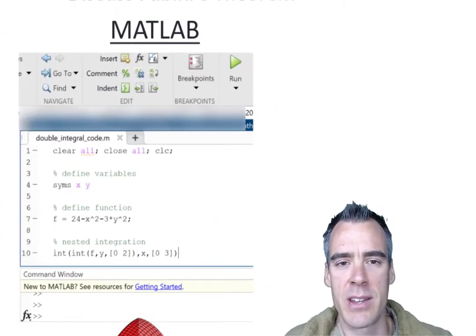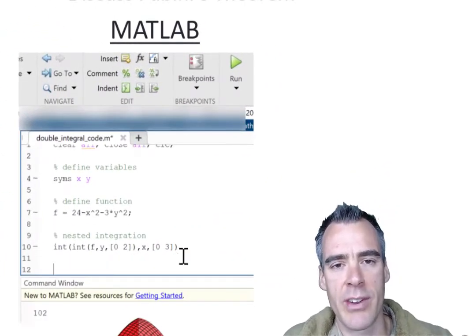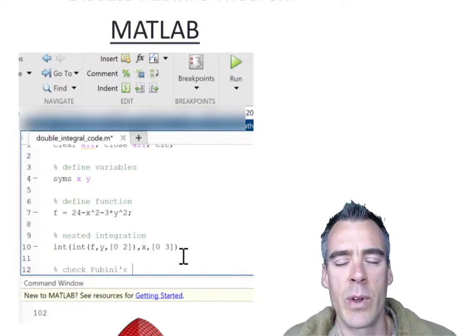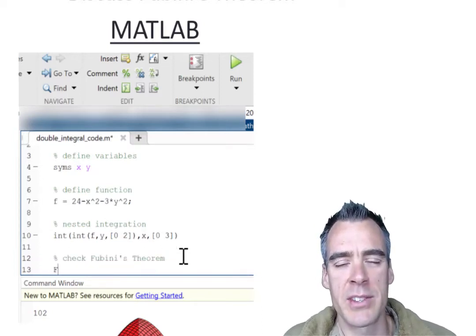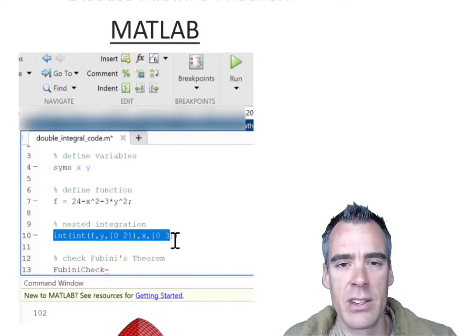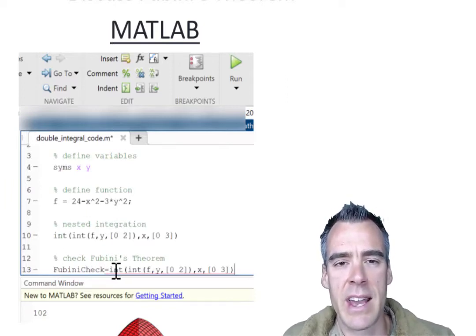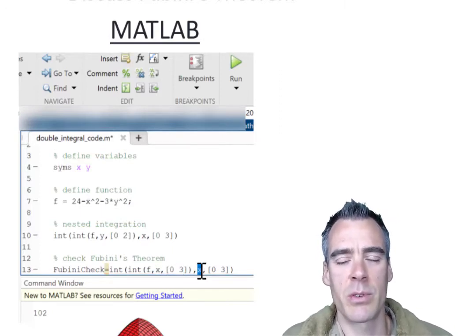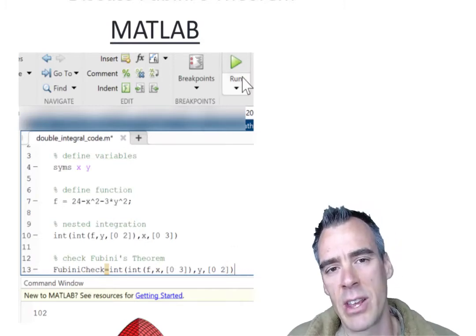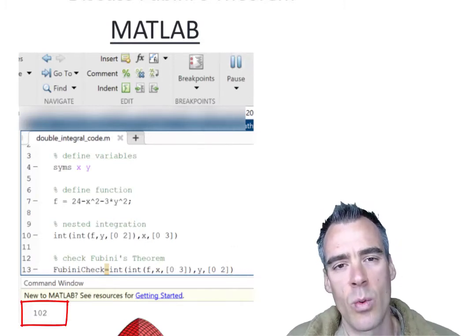Hopefully you're trusting MATLAB now because you got the same answer, so it's going to be a bit quicker if I just show you how to do this in MATLAB. So we got our function defined and our variables already, so all we need to do is change our inside integral here to the integral with respect to x over the range 0 to 3. And our outside integral becomes with respect to y over our range 0 to 2. And evaluating that, we end up with 102.